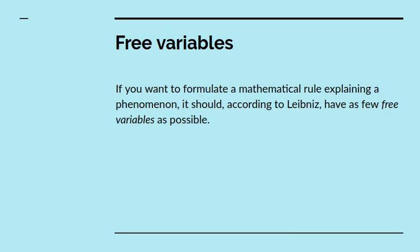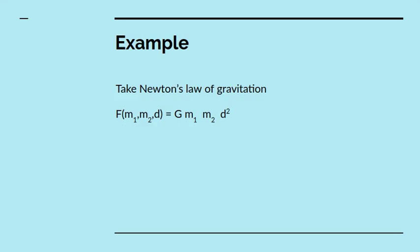But in general, if you want to formulate a mathematical rule explaining a phenomena, a rule that you want to say is a law that governs that phenomena. According to the mathematician and philosopher Leibniz, it should have as few free variables as possible.